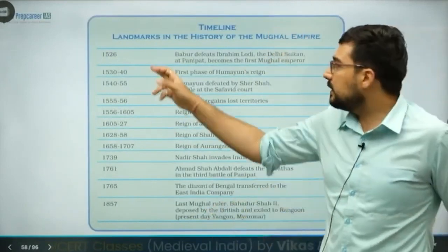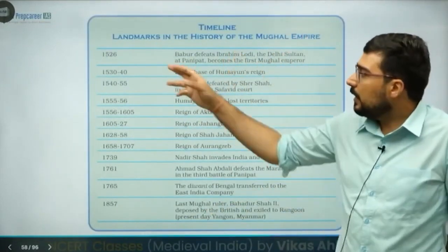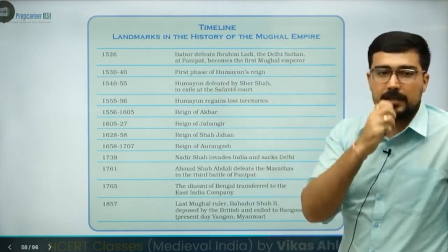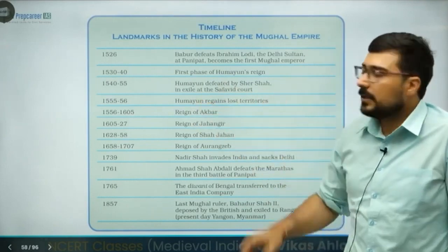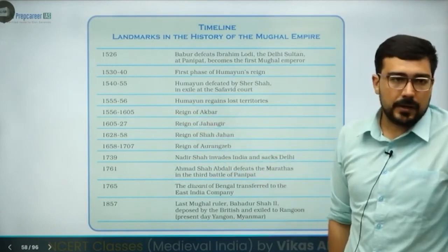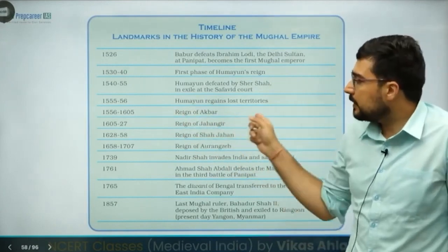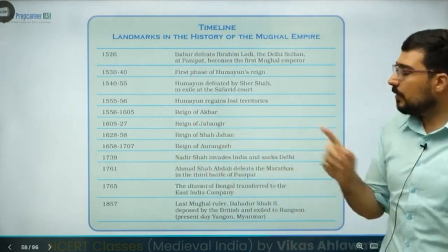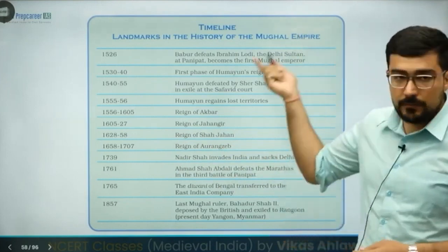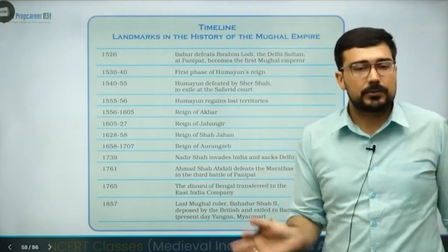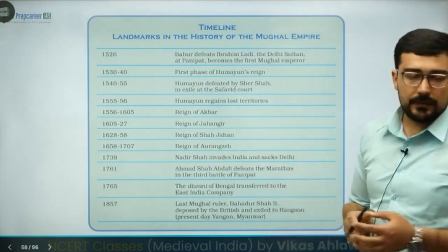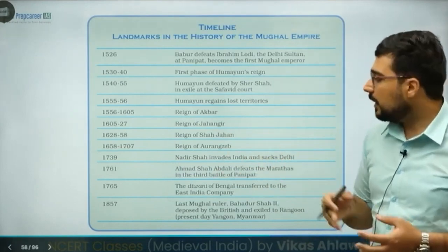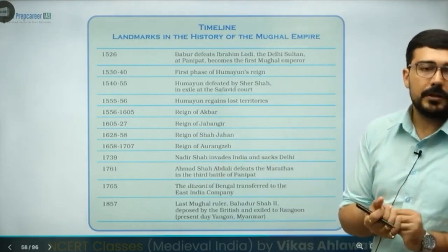Key timelines: 1526 — Babur defeats Ibrahim Lodi. 1530–1540 — first phase of Humayun's reign with instability, then Sher Khan's rise and Humayun's exile to the Safavid kingdom. 1555–56 — Humayun regains territory. Then the reign of Akbar and the Second Battle of Panipat in 1556. 1605–1627 — Jahangir. Then Shah Jahan. Aurangzeb. 1739 — invasion of Nadir Shah, who took the Peacock Throne.